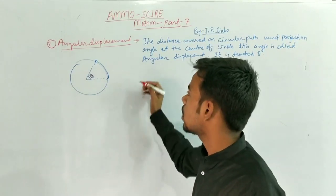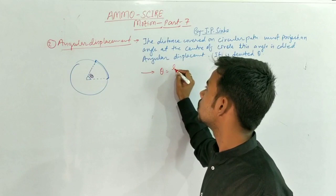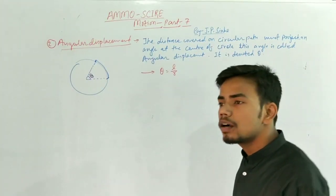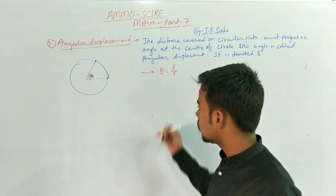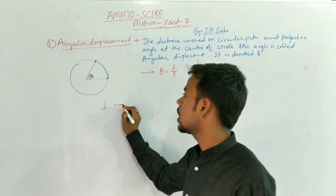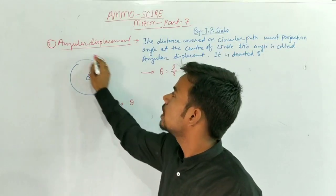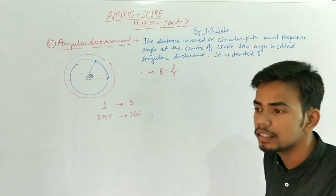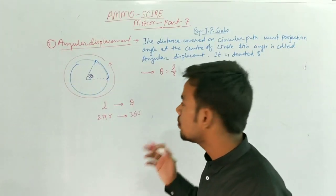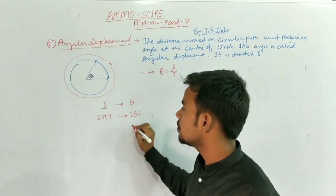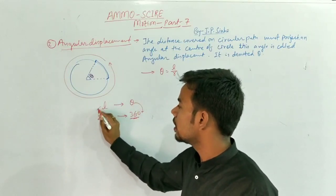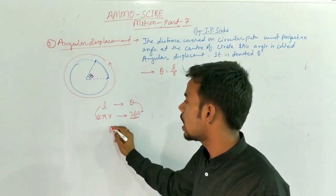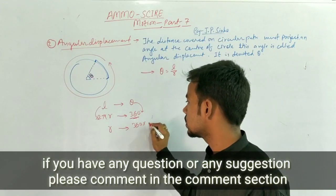Toh hum log yeh theta ke baare mein jab study karenge — theta ka value kya hojata hai? L upon r hojata hai. Ab aap kahoge kaise aaya? Toh dekho: jab tum yahan pe length ko compare karoge baaki data se, toh length kitna hona chahiye aur angle kitna hona chahiye. Jab yeh poora length cover kar lega ek rotation mein, toh 2πr cover hoga aur woh 360 degree mein hoga.